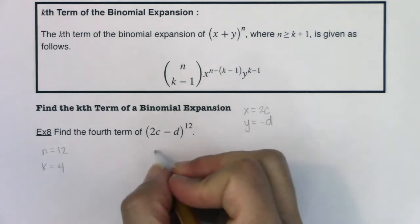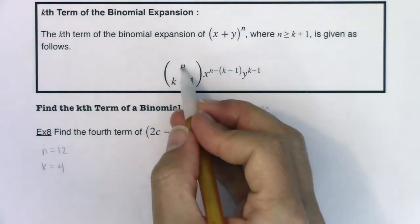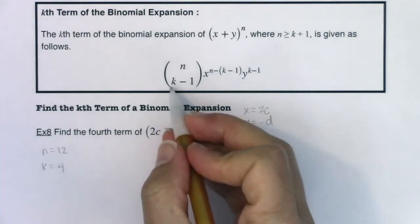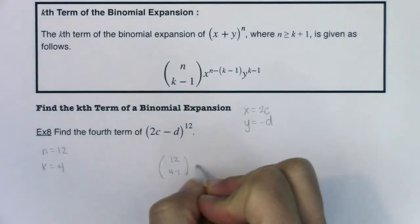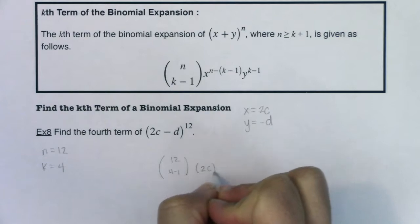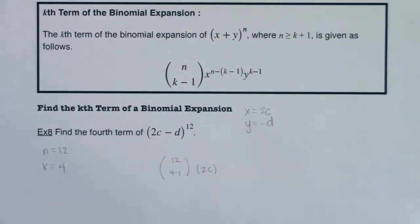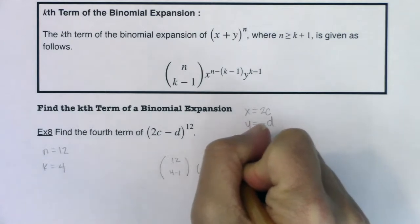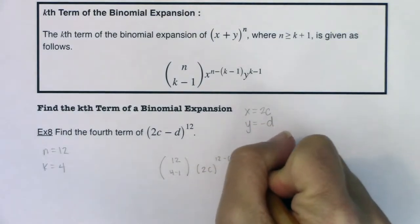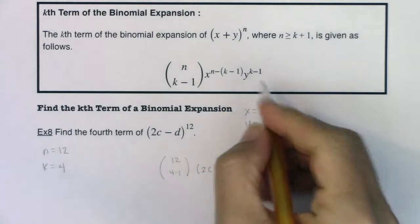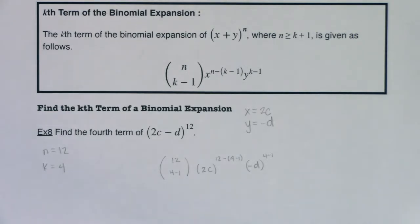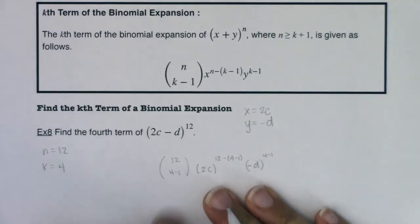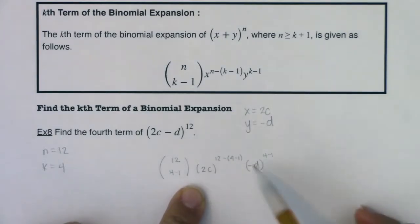So if I want the fourth term, okay, according to this formula, I will have an n up here, so I want 12, and then I want to choose k minus 1, so let me write 4 minus 1 here. And then I will have x, which is 2c, raised to the n minus k minus 1. So I want to do raised to the 12 minus 4 minus 1. And then I want y, which is negative d, raised to the k minus 1 power. All right, so if you want to go step by step along that formula, that's what it looks like. I feel like when we do it this way, it makes it a little bit more convoluted than it needs to be.